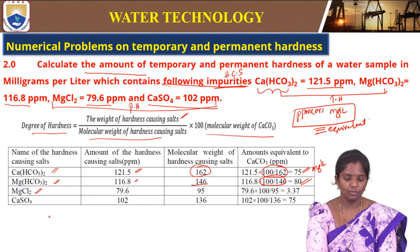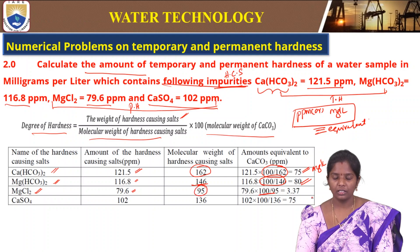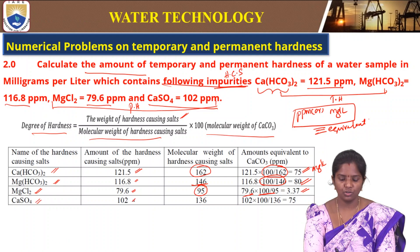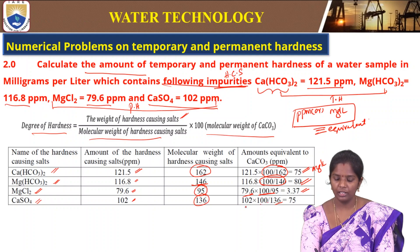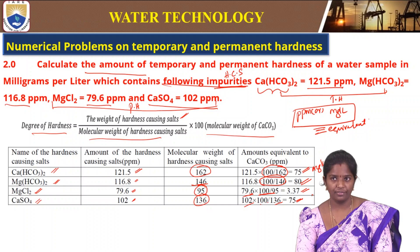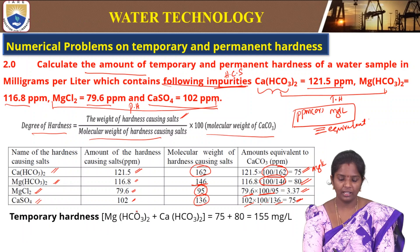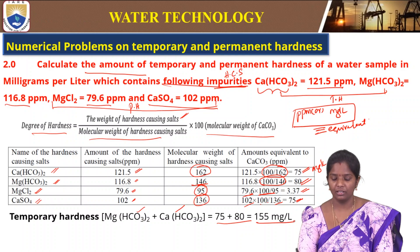For magnesium chloride, 79.6 is given and the molecular weight is 95, so 79.6 × (100/95) = 83.79 mg/L for the equivalent. For calcium sulphate, 102 is given and the molecular weight is 136, so 102 × (100/136) = 75 mg/L.